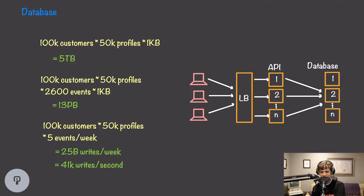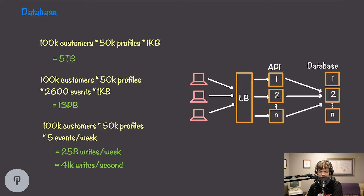We need to horizontally scale our database and shard it so writes and data are distributed across nodes. When sharding, we need to think carefully about the shard key. If we sharded on email address and queried a list of emails, we'd have to hit every single database node since all those emails would be scattered. A better choice is customer ID — we're never looking at data across multiple customers, so every customer will have all their data stored on one node. This is like having one dedicated database per customer, greatly improving performance.